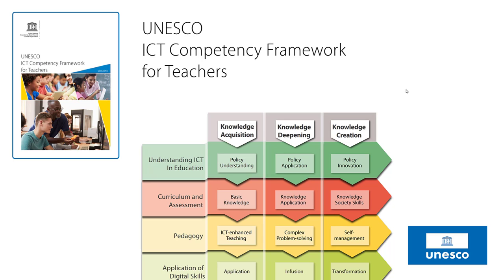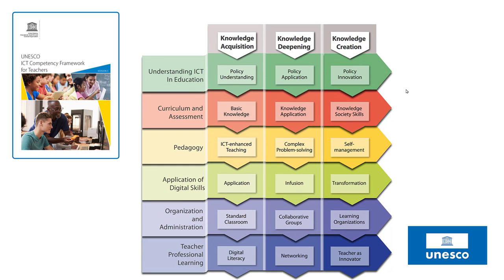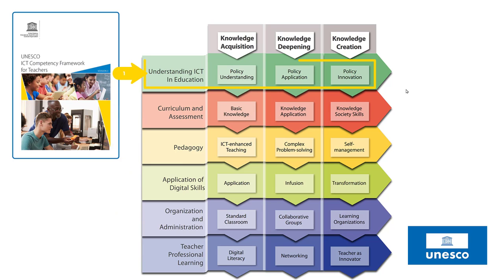If we look carefully at the grid or matrix, you'll notice that there are six bands or six rows and three columns. The rows are the six areas where ICT can play a significant role in helping teachers achieve their daily responsibilities. The first row, at a very high level, is understanding ICT in education — specifically the policy environment per country or institution and what it says about ICT.